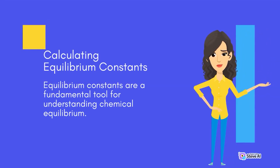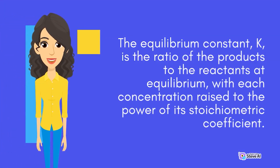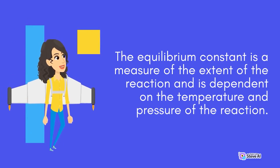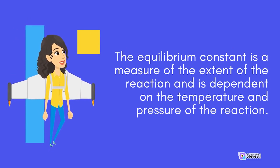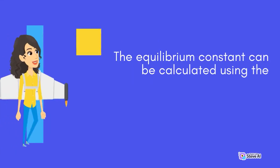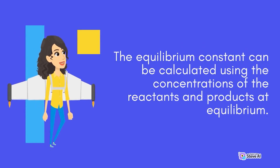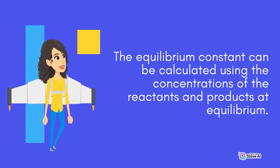Calculating Equilibrium Constants. Equilibrium constants are a fundamental tool for understanding chemical equilibrium. The equilibrium constant, K, is the ratio of the products to the reactants at equilibrium, with each concentration raised to the power of its stoichiometric coefficient. The equilibrium constant is a measure of the extent of the reaction and is dependent on the temperature and pressure of the reaction. The equilibrium constant can be calculated using the concentrations of the reactants and products at equilibrium.